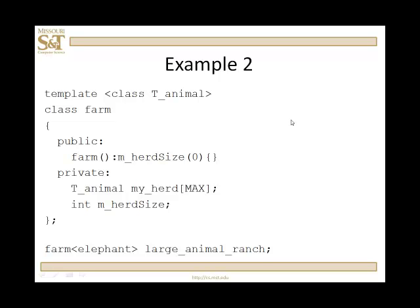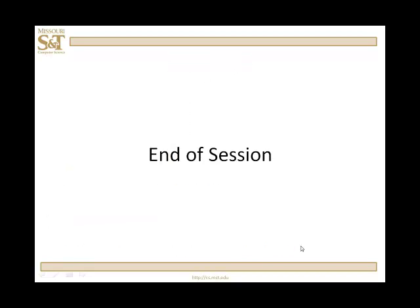I can create a farm class. Templated class. Templated on template parameter tAnimal. We have in public a constructor that sets the herd size to zero. And in private, we've got an array of tAnimals called MyHerd. And an int to represent the size of the herd. And then again, I can create a farm of elephants, which I will call LargeAnimalBranch. And so I have used my templated classes to create objects with different data types instantiating the template parameter. And that's the end of this session.